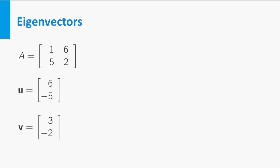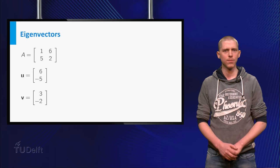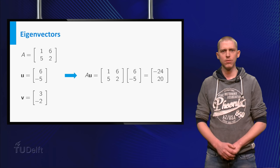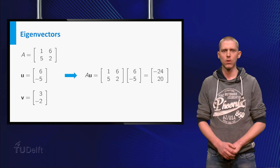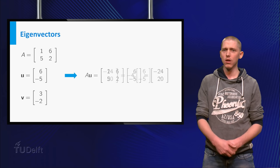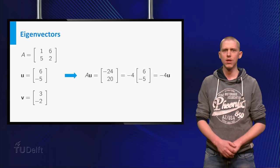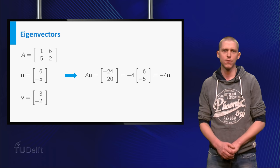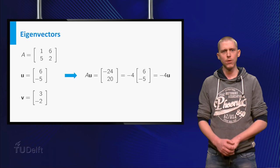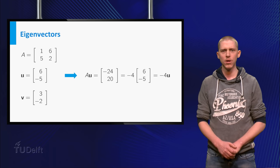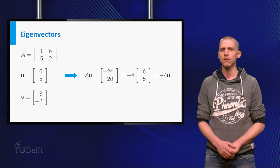Using the definition of an eigenvector, it is easy to check whether, for example, the vectors U and V are eigenvectors of the matrix A. Let us first take a look at U. If you multiply A and U, you get the vector minus 24, 20. If you take a closer look at this vector, you will see that A times U equals minus 4 times U. So if you take lambda equal to minus 4, you have found that U is an eigenvector of A, and as a bonus that minus 4 is an eigenvalue of A.